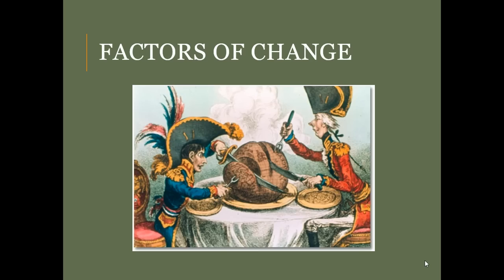We're going to first talk about factors of change. This cartoon is a perfect example of what factors are beginning to be altered in the globe during this time period of about 1800 to 1914, right when World War One begins. In this cartoon you see France and Britain, and as empires they are carving up and plating the world for themselves. This is the primary driver of change — the first time Europe really becomes a full-fledged factor in global politics.